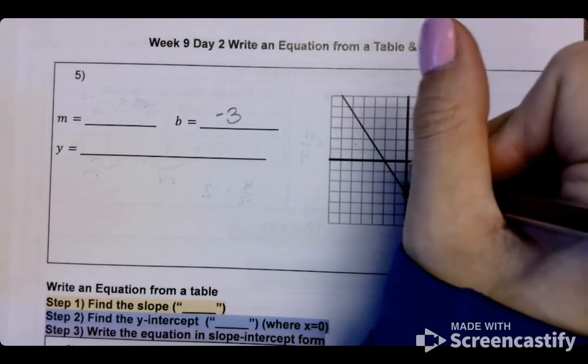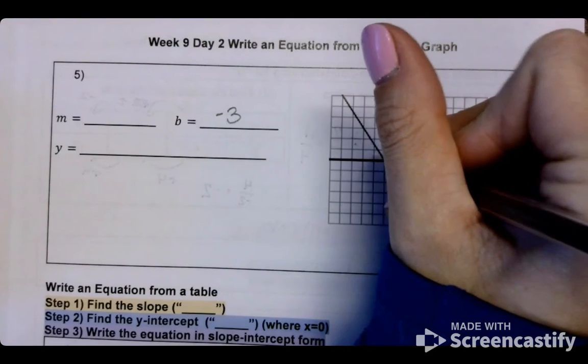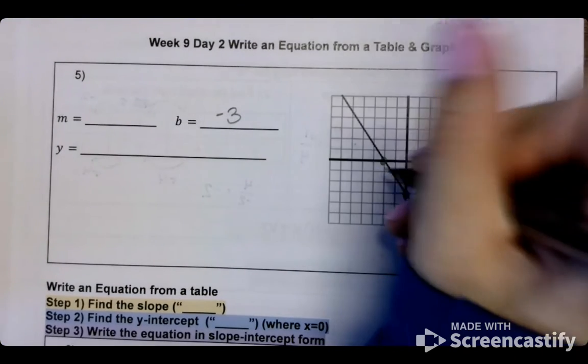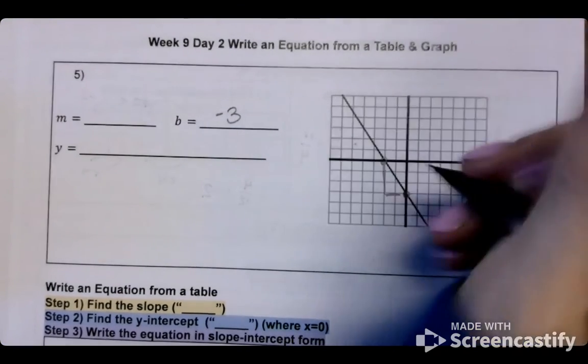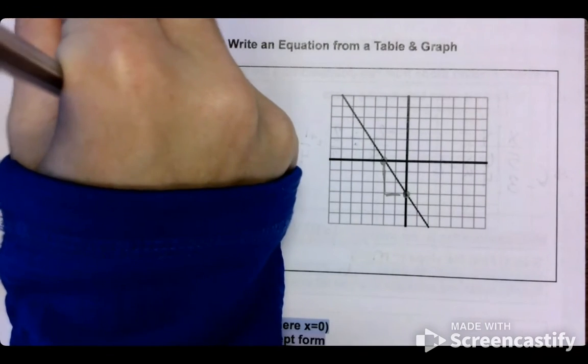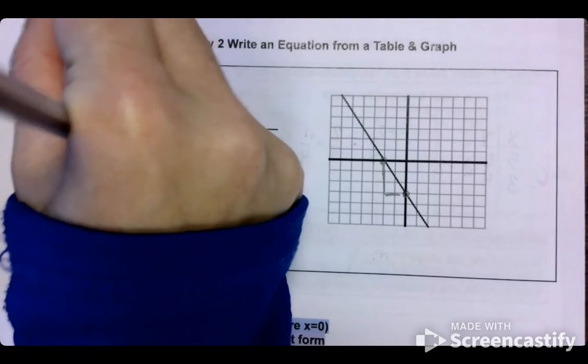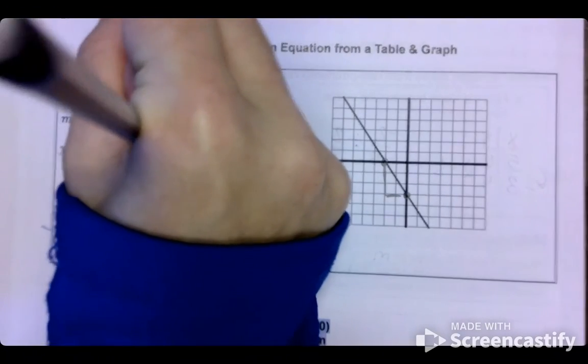And then we should have had a point. No, no, no. We could have one there. And up and down would be 3. Left to right would be 2. It is a negative slope.